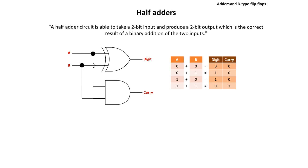And of course in binary, if we add 1 and 1, the total is 2, or 1 0, so there'd be a 0 in the first column and we'd have to carry 1 to the next column.